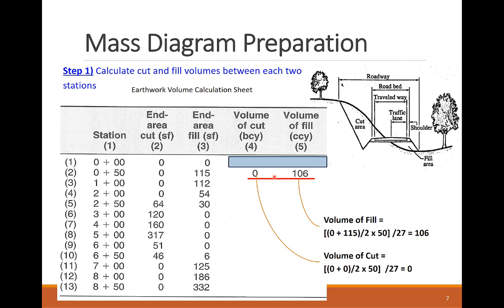The first end area calculation will be applied for the cut and fill volumes between station 1 and 2. The fill volume is calculated as the average of both fill end areas, 0 and 115 square feet, times the length between the two stations, 50 feet. So we end up with 106 bank cubic yards for the first volume.